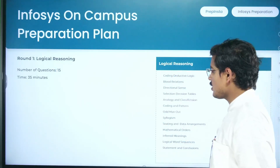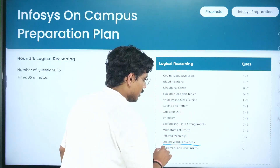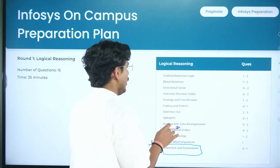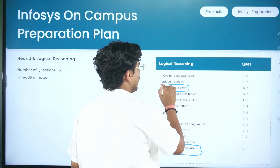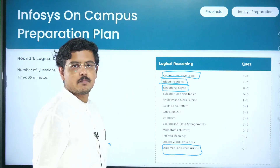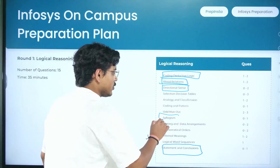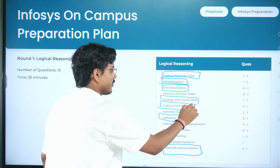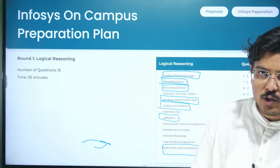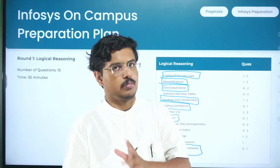Moving to logical reasoning — statement and conclusions are essential; no aptitude exam is complete without them. Also top priority: directional sense, blood relations, and coding deductive logic. Pause the video and take a screenshot of this list. Topics like syllogism, coding and pattern, analogy and classification are also very important. Seating and data arrangement is often asked and is one of the most high-rewarding topics, so be careful while preparing for it.